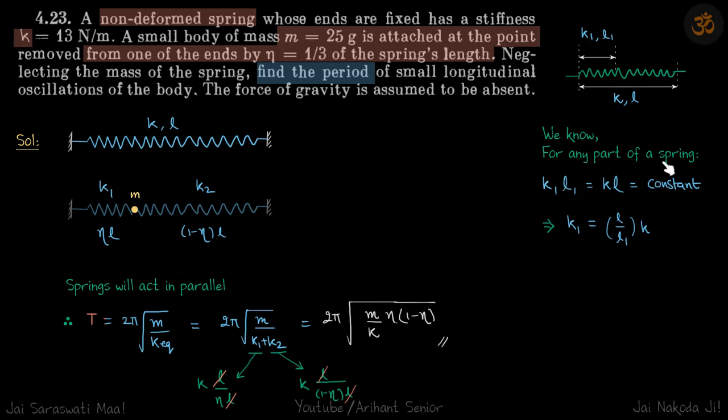For any part of the spring, kl is constant. So this gives k1 is equal to l by l1 into k. Using this we can find the stiffness k1 and k2 because we know l1 and l2.